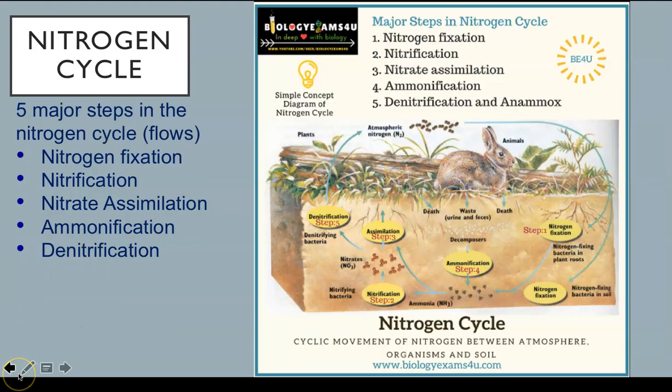For plants to take up nitrogen, it must be in the form of ammonium or nitrate ions. Animals eat plants and so take in their nitrogen in the form of amino acids and nucleotides. The nitrogen cycle is made up of five major steps: nitrogen fixation, nitrification, nitrate assimilation, ammonification, and denitrification.